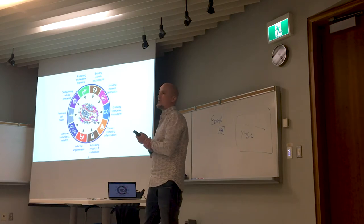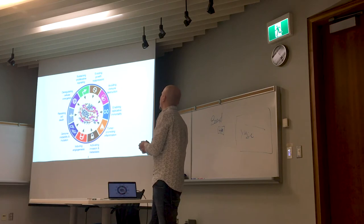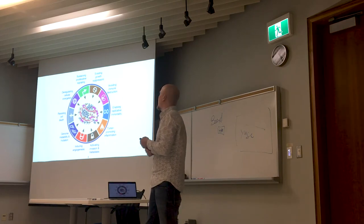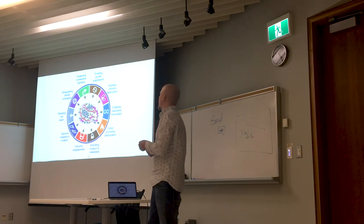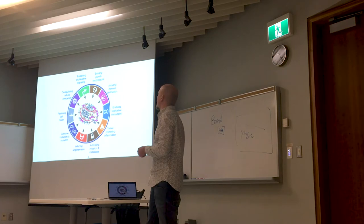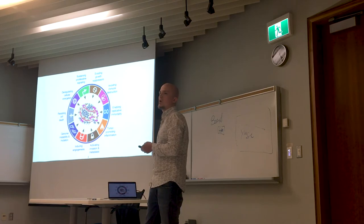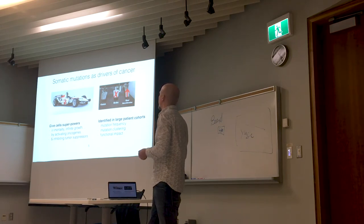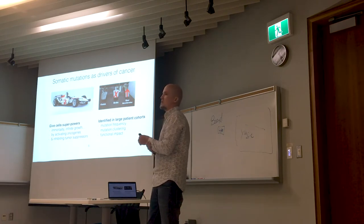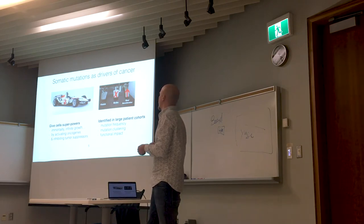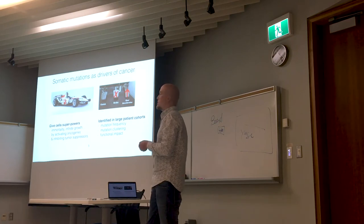Why do these events occur? We know these mutations affect critical pathways, mostly related to growth — mutations increasing growth or blocking it — and resistance to cell death. There is also genome instability and cellular energy processes such as angiogenesis that enable more nutrients to reach tumors. These pathways are called the hallmarks of cancer. The driver mutations that enable those hallmarks are what we're after. Somatic mutations drive cancer by activating oncogenes and by inhibiting tumor suppressors — protective genes that should normally be active.